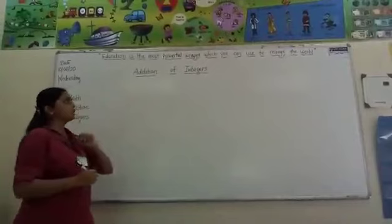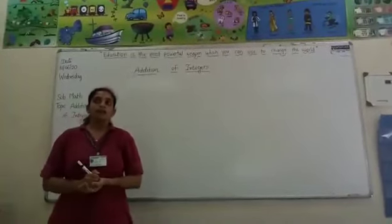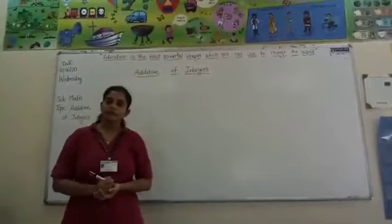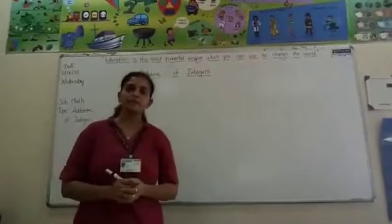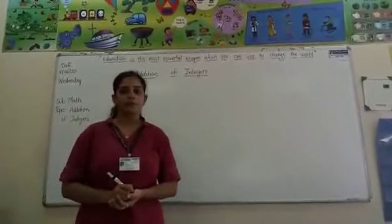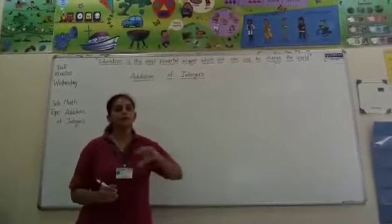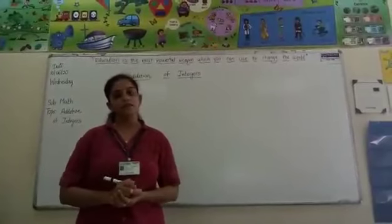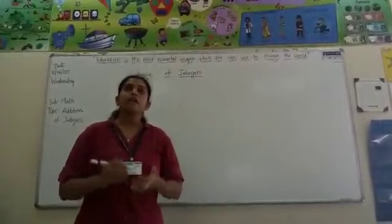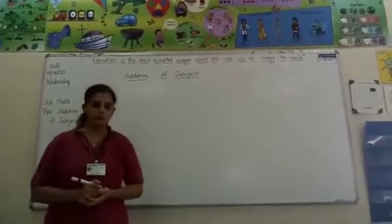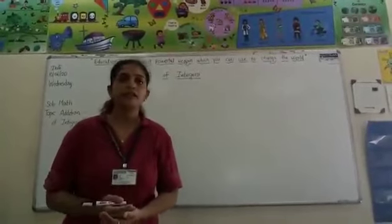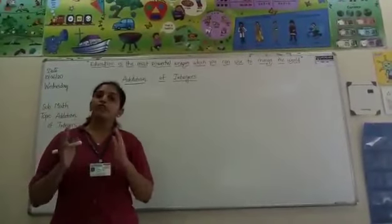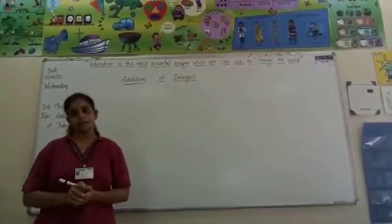Now we are going to learn addition of integers. Again we will start with the basics. When you first learnt addition, the teacher did not give you a direct sum like 4 plus 3 equals 7. You learnt it on the number line, so that your concept would be clear why 4 plus 3 is 7 and not 6. Same way, integers is new for you — it is introduced only in 6th standard. So this is the very first time you are learning addition of integers, and that's why again we will start with the number line.